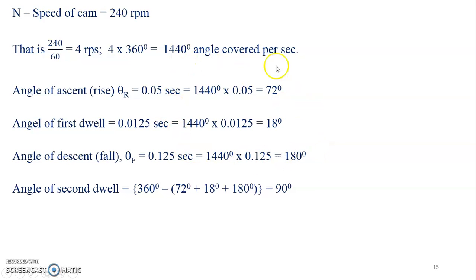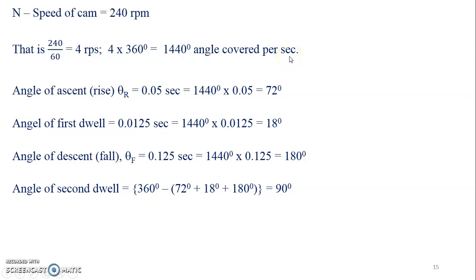This is one more type of problem where the speed of the cam is given and the angles of ascent, dwell, and descent are given in terms of time. In such cases, convert rpm to revolutions per second, then calculate total angle per second. For the given time frame, calculate the angle covered for each action — rise, dwell, fall, or second dwell. Once you have these, the rest follows the same process: displacement diagram and cam profile.